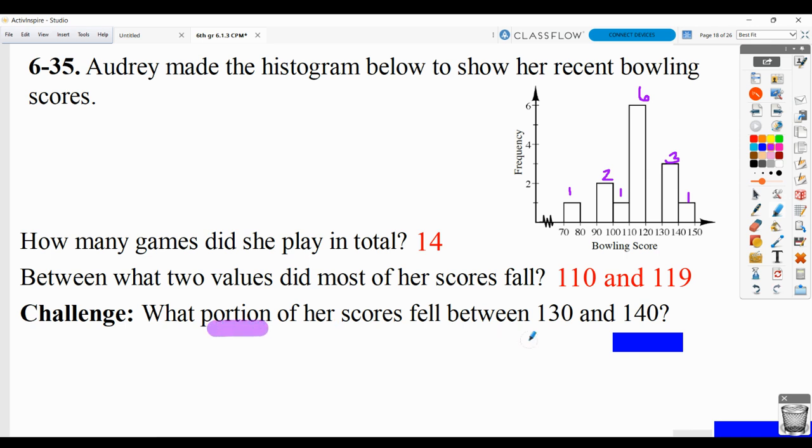And then what portion of her scores fell between 130 and 140? Remember, in this book series, portion means fraction. So how many are between 130 and 140? There are 3 out of 14. So 3/14ths.